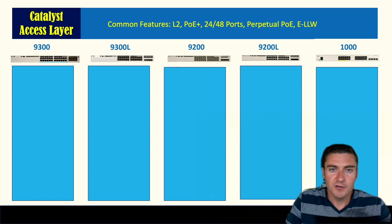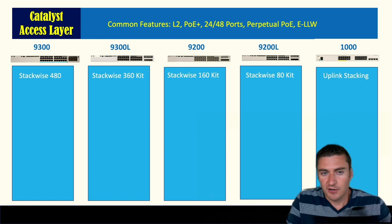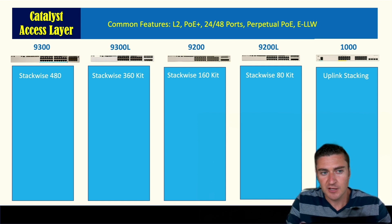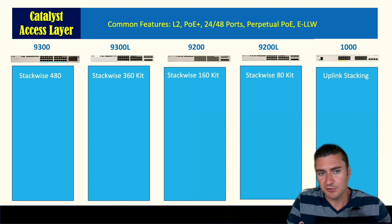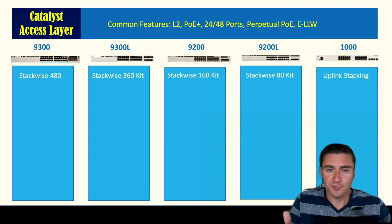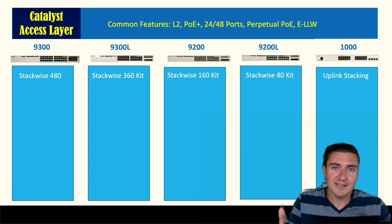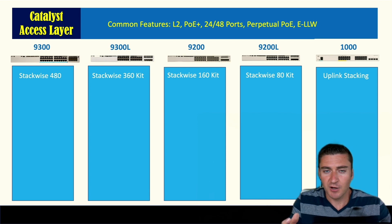Now let's talk about what sets these switches apart, starting with stacking capabilities. The 9300 supports StackWise 480 — a 480 gigabit backplane stacking capability built right into the switch; you just need the cables. The 9300L has StackWise 360 at 360 gig, but you need to purchase stacking modules that go into the back.